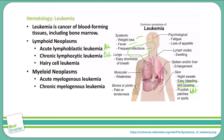On the myeloid side of things, we have two different types of leukemia. You have the acute myelogenous leukemia, also known as AML, and our chronic myelogenous leukemia, also known as CML.